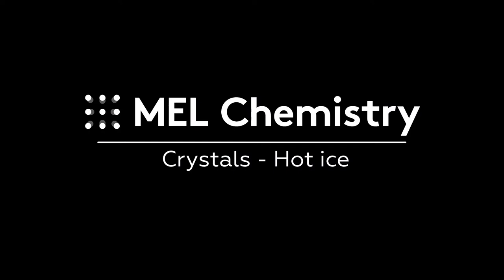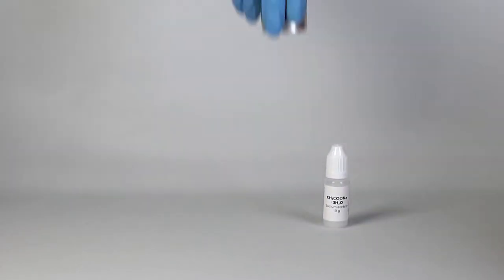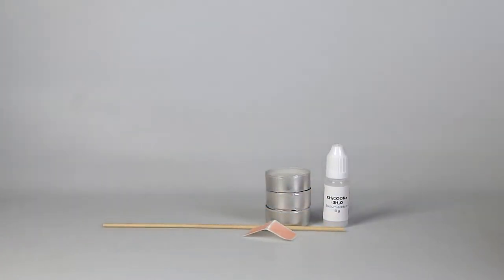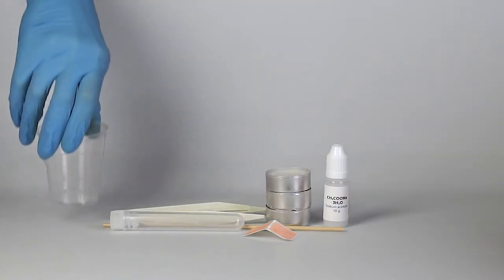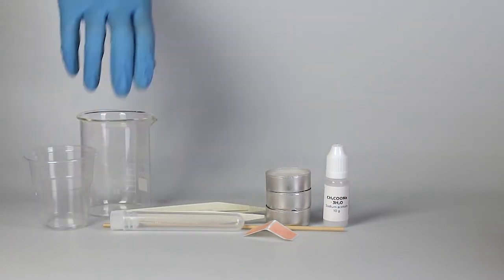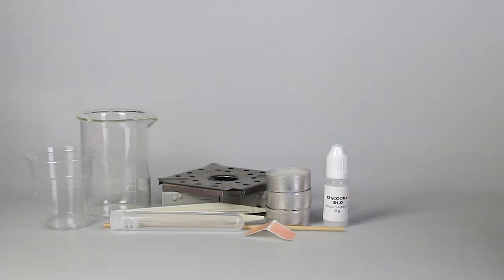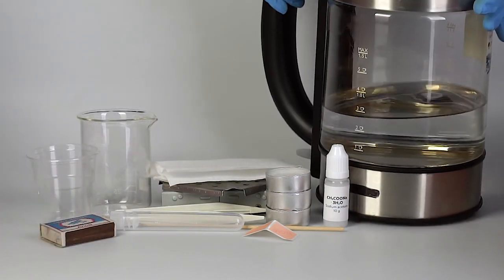For the hot ice experiment, you'll need sodium acetate, three candles, a thermochrome sticker, a splint, tweezers, and a plastic test tube. From the starter kit, take a disposable cup, a beaker, a solid fuel stove, and a flame diffuser. Also, prepare a paper towel, matches or a lighter, and a kettle of boiling water.